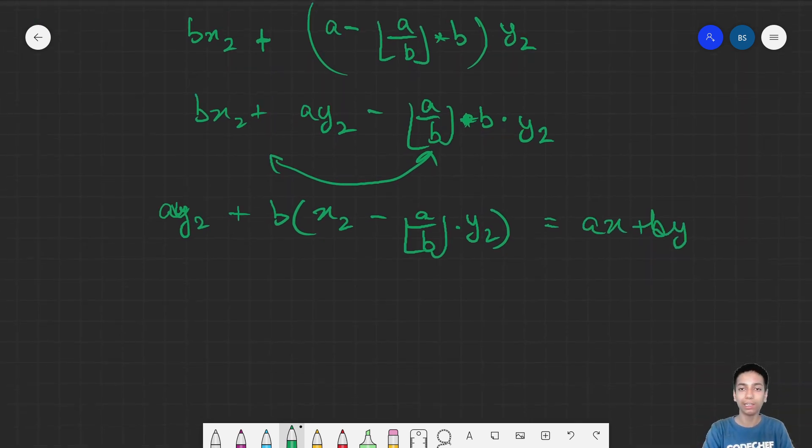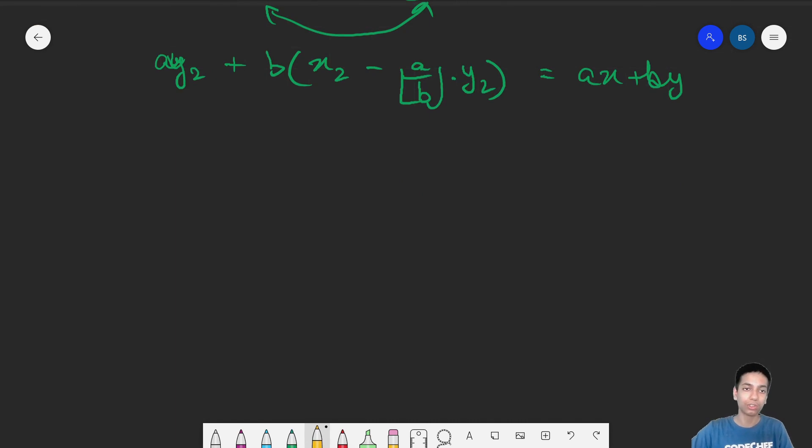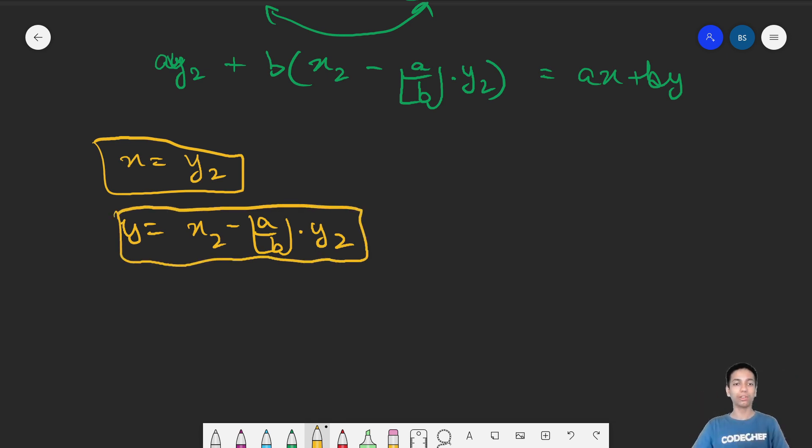Now, we can clearly equate the coefficients. We get X equals Y2 equating the coefficient of A. And we have Y equals X2 minus A by B times Y2. If we can find out recursively the value of X2 and Y2, then we can find the value of X and Y given by these equations.